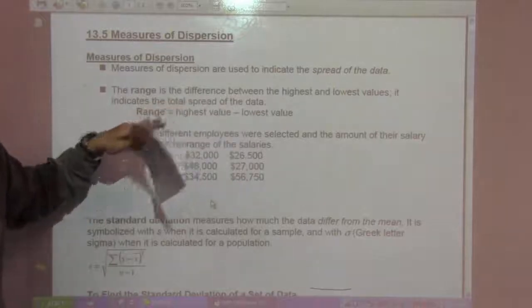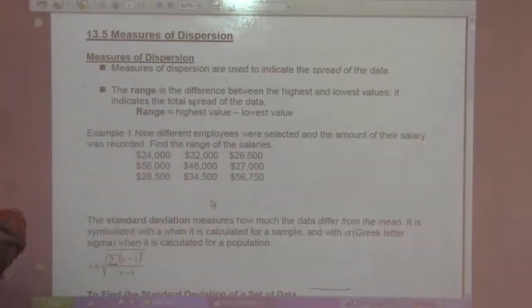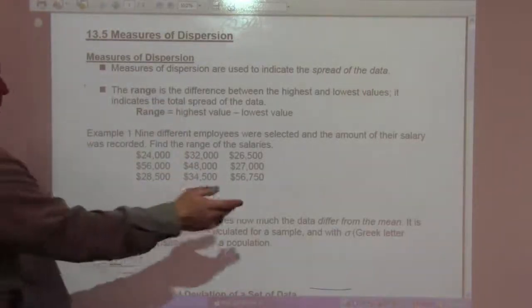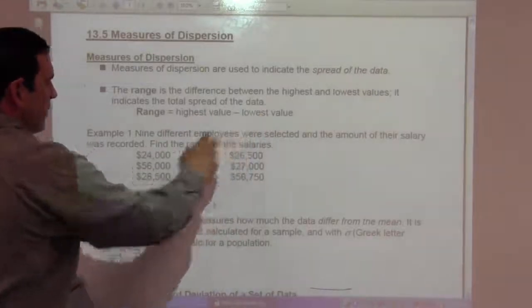The range is the difference between the highest and the lowest values. It indicates the total spread of the data. So that's range: highest value minus lowest value.